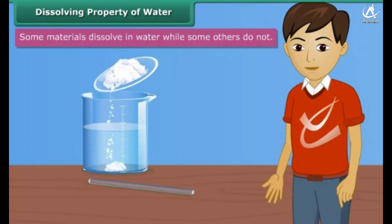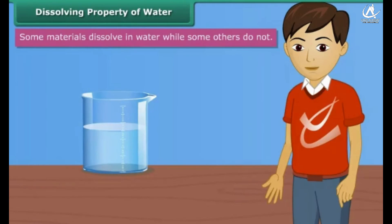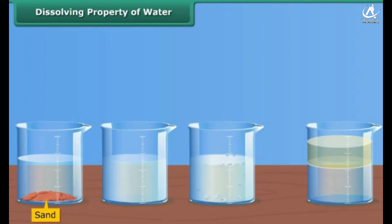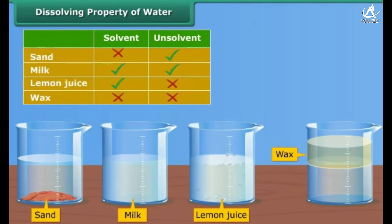Water is a universal solvent. It dissolves many things, but there are certain items that do not dissolve in water. Collect sand, milk, lemon juice and wax, and also take some sugar and salt. Try to dissolve these materials in water separately. Make a table of your observations and compare your observation table with the table shown on screen.